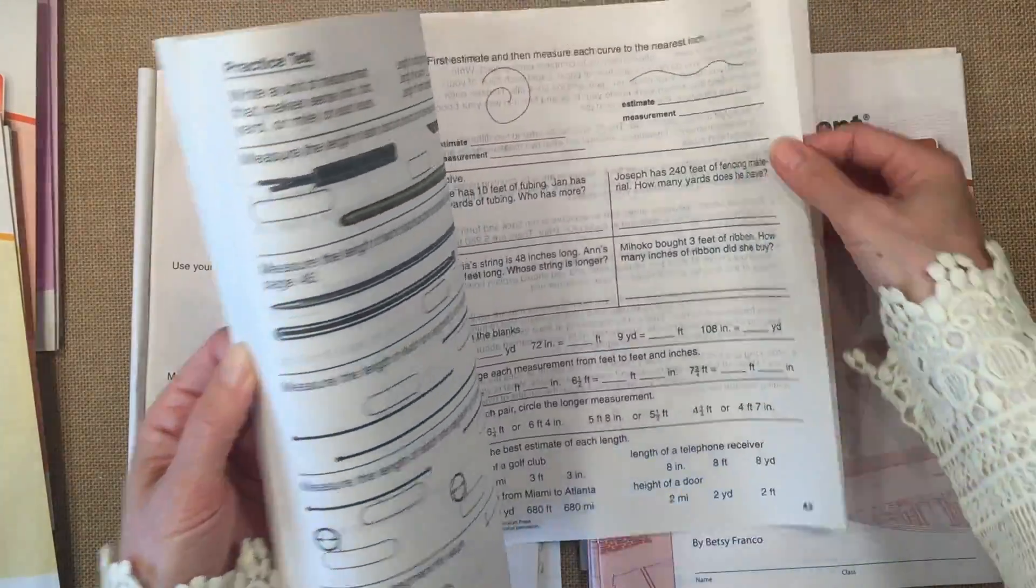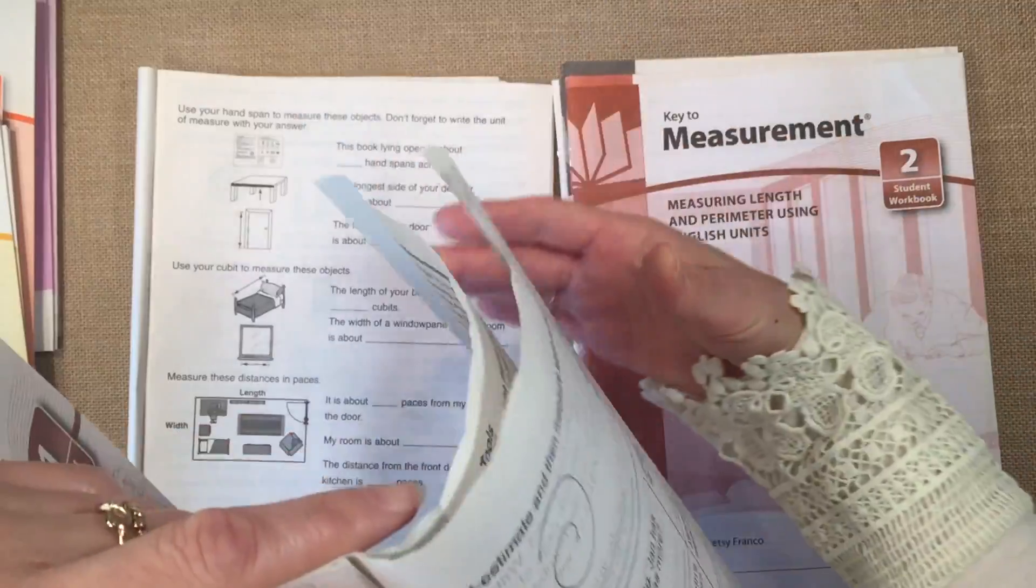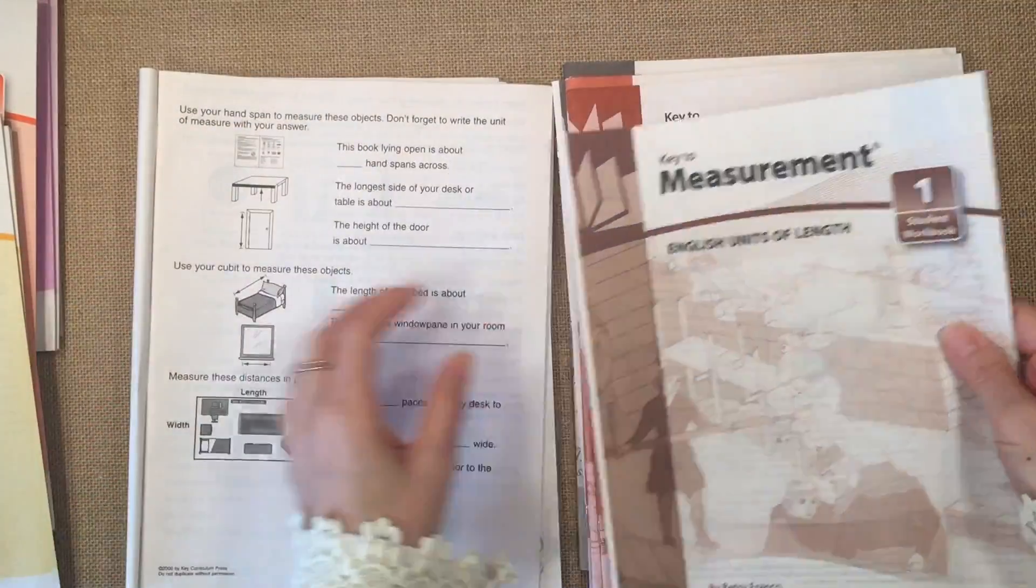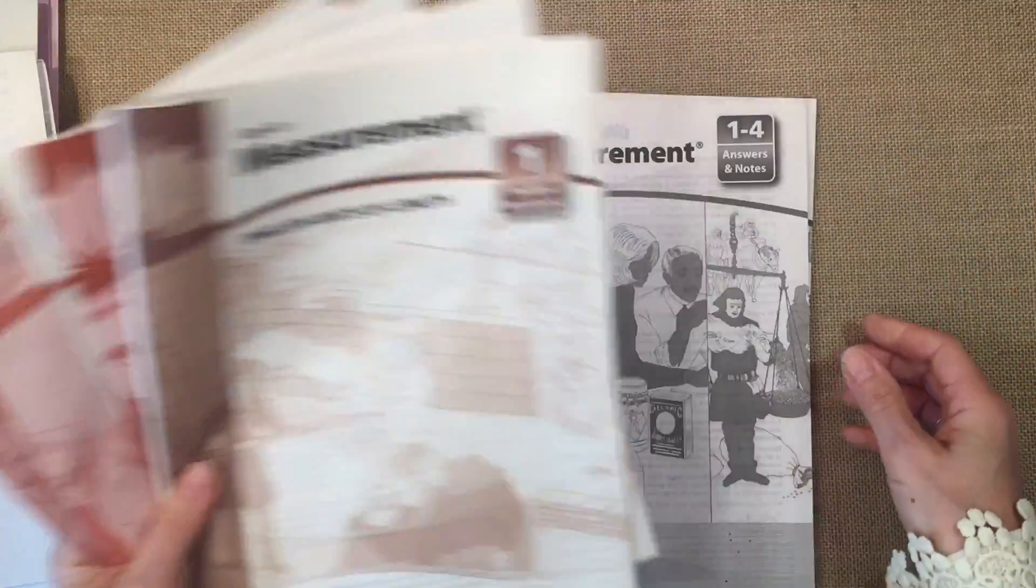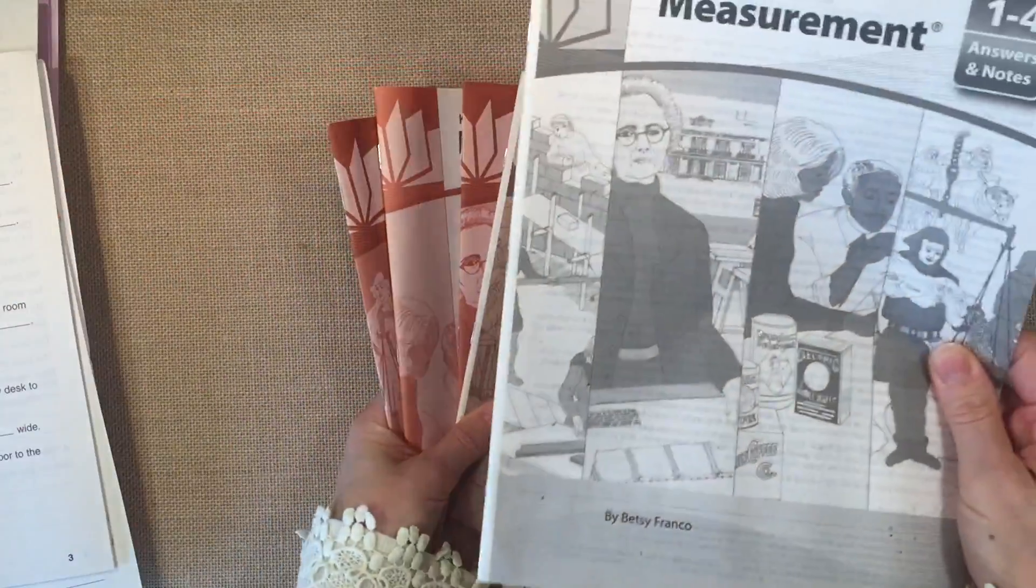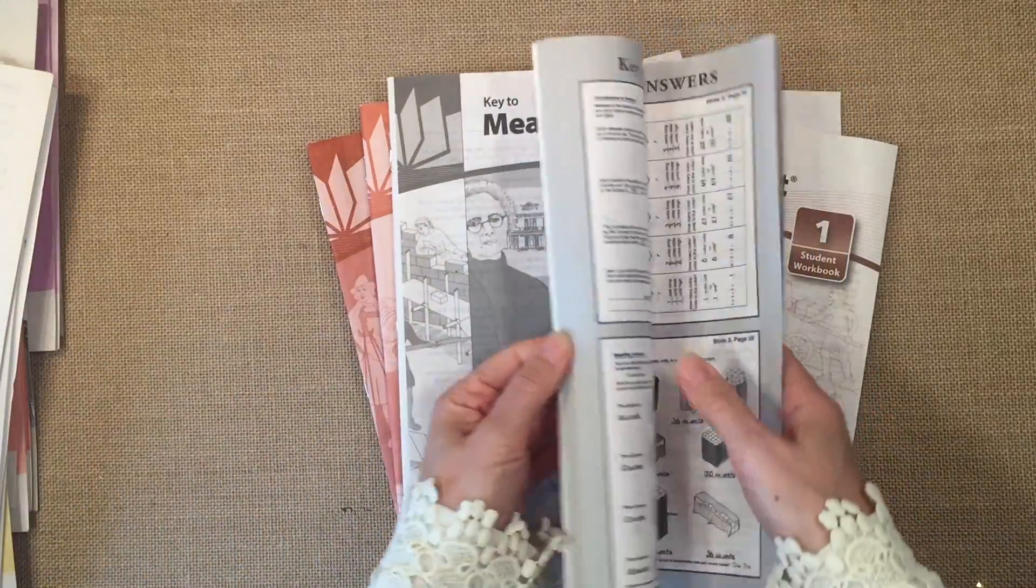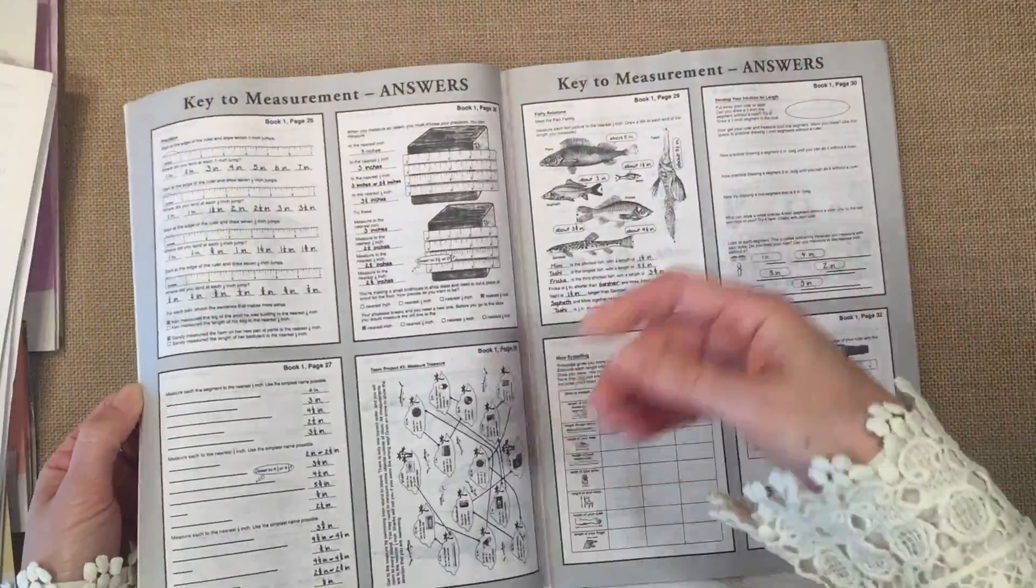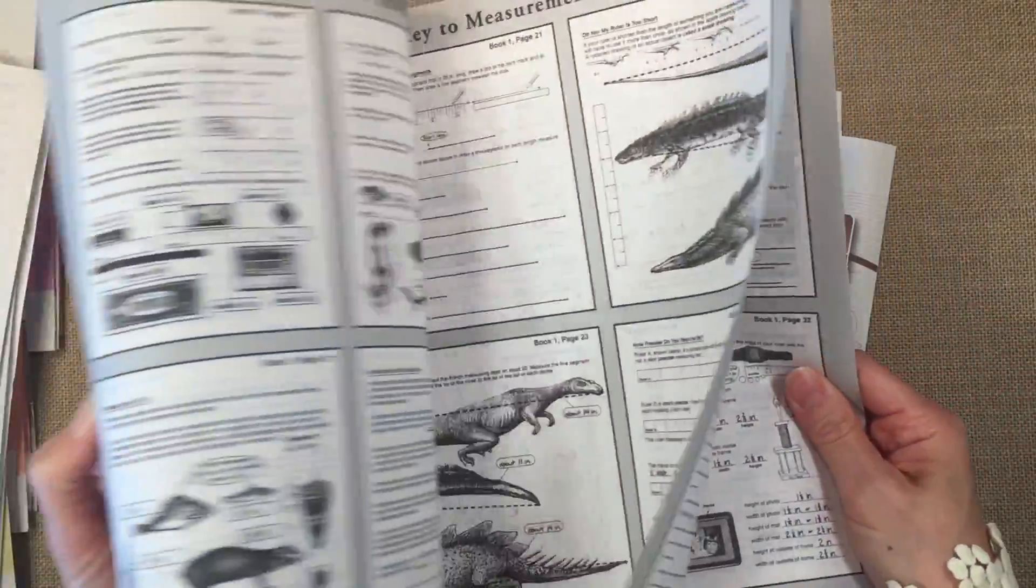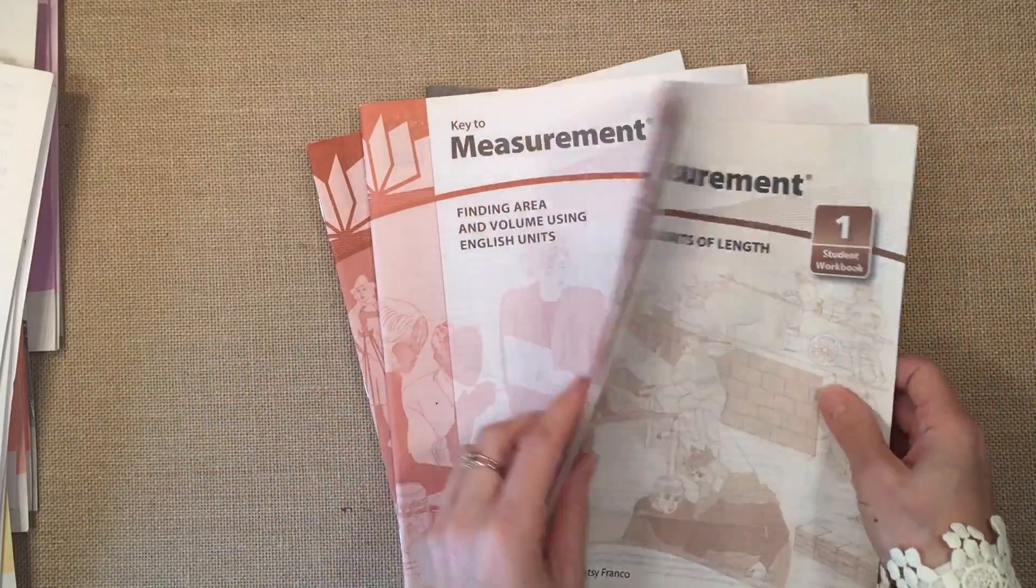Now these workbooks are about 45 pages long. The paper itself is really thin, almost like newsprint paper. For measurement, there are four books and it does come with an answer key if you decide you want to get the answer key, which I highly recommend. When we first did this program, I just got the workbooks thinking that I could figure out the answers and it was really way too time consuming. So I don't advise not picking that up.